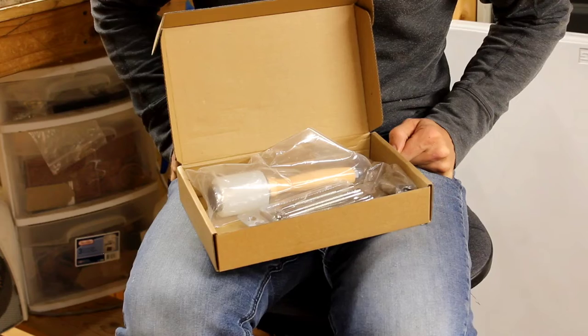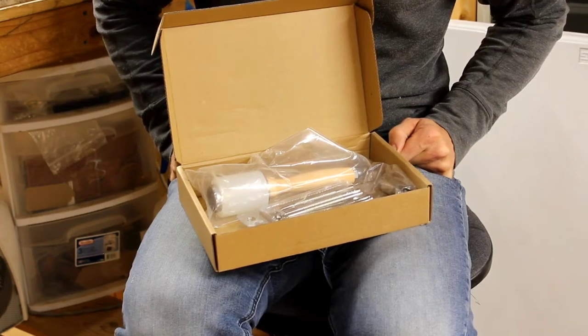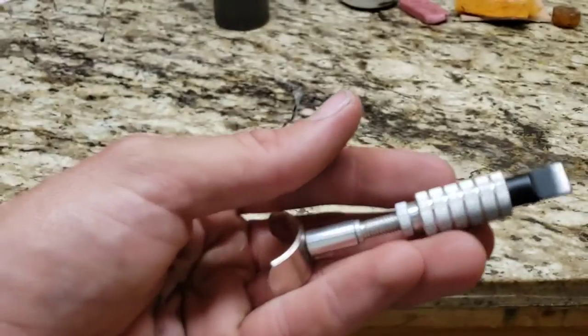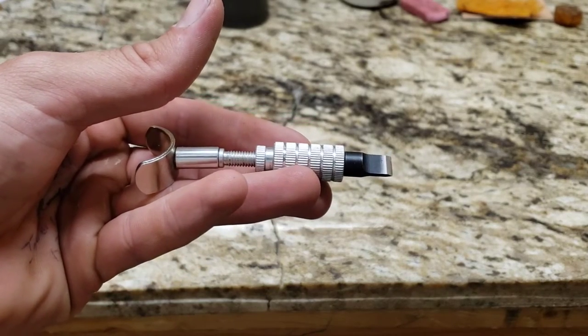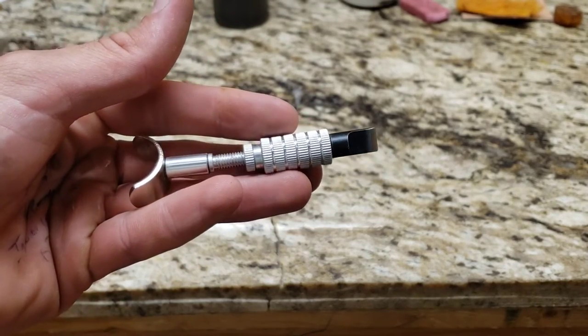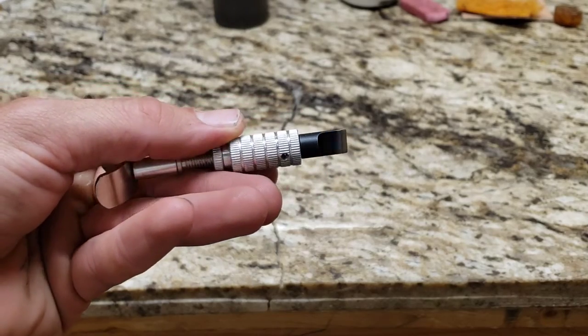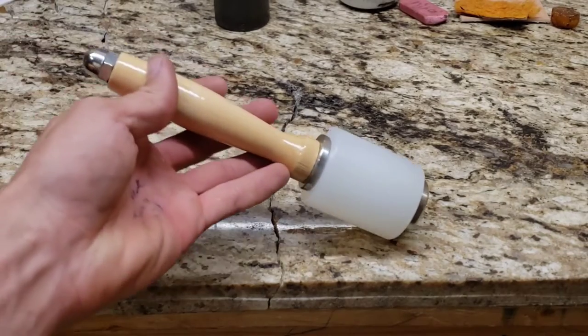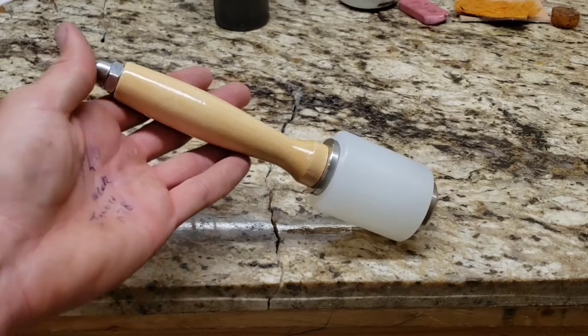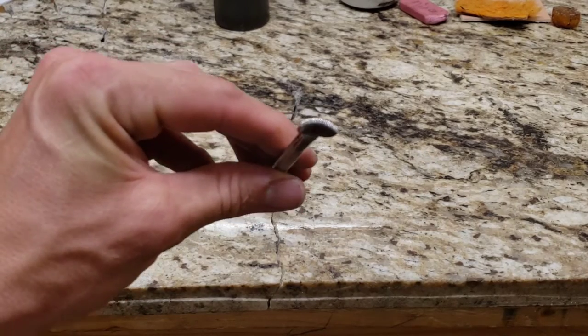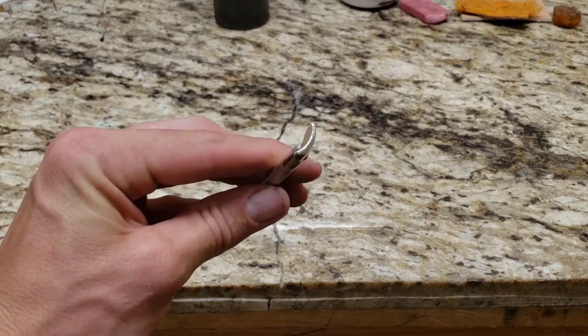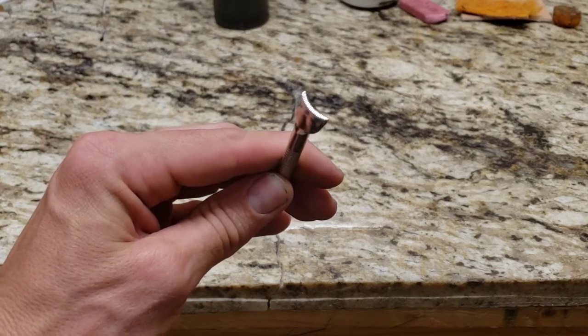So let's check out the tools. Here's the swivel knife and I'm just going to be using it the way it came from the box. I'm not going to be doing any sharpening to it. And this is the maul. I didn't weigh it but I assume it's right around 12 ounces or so. And here's a veiner. It's a little wider than what I'm used to.